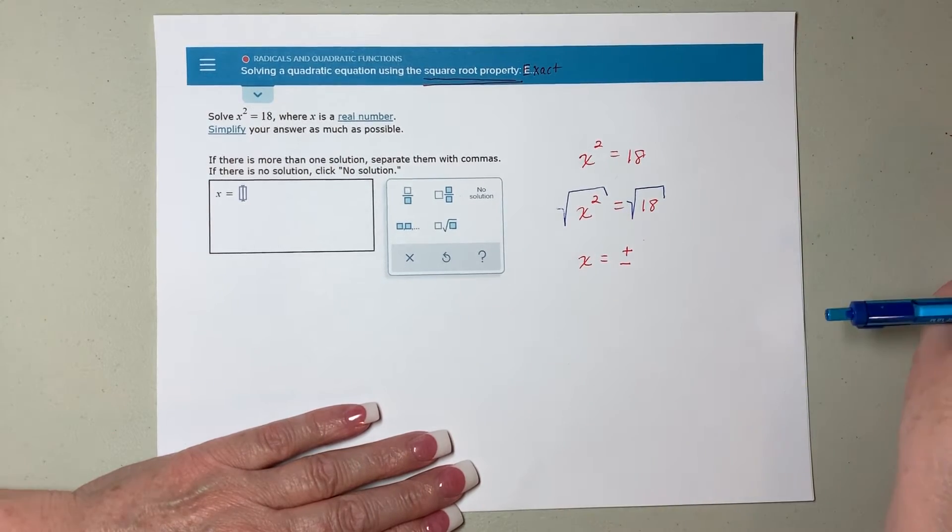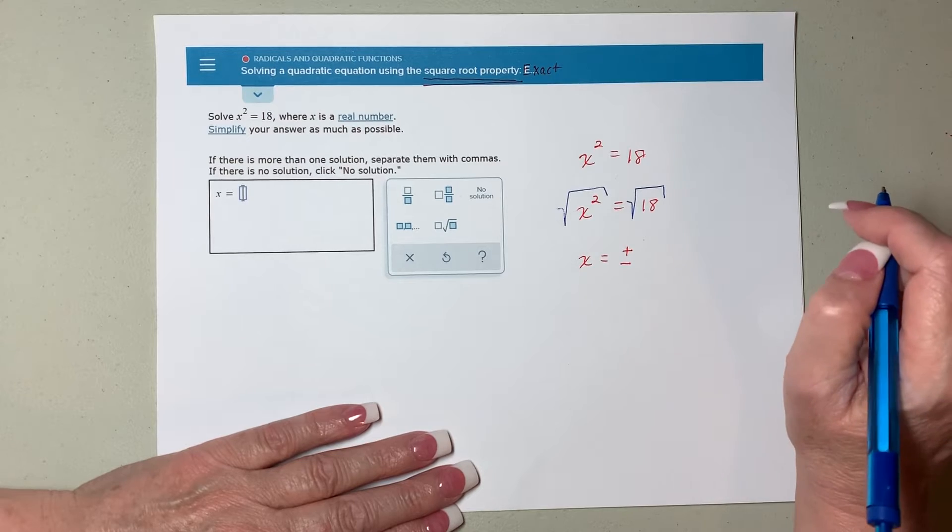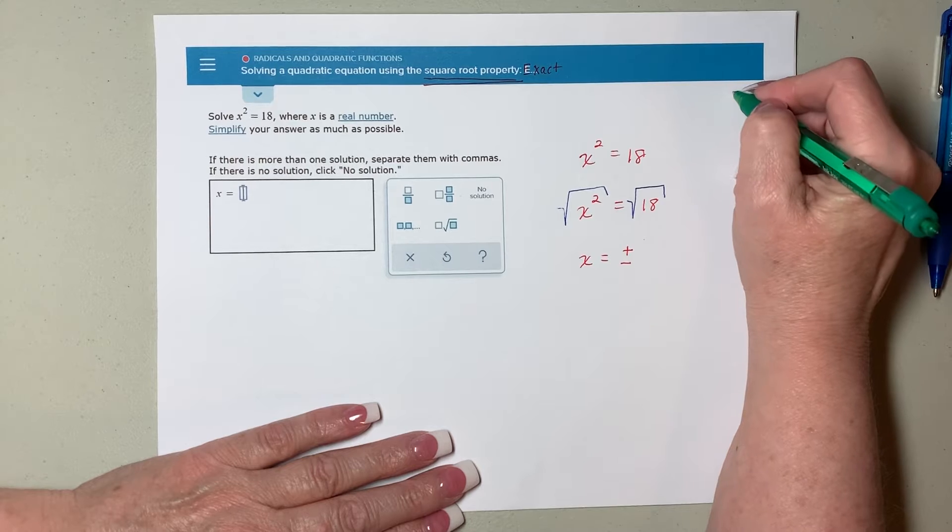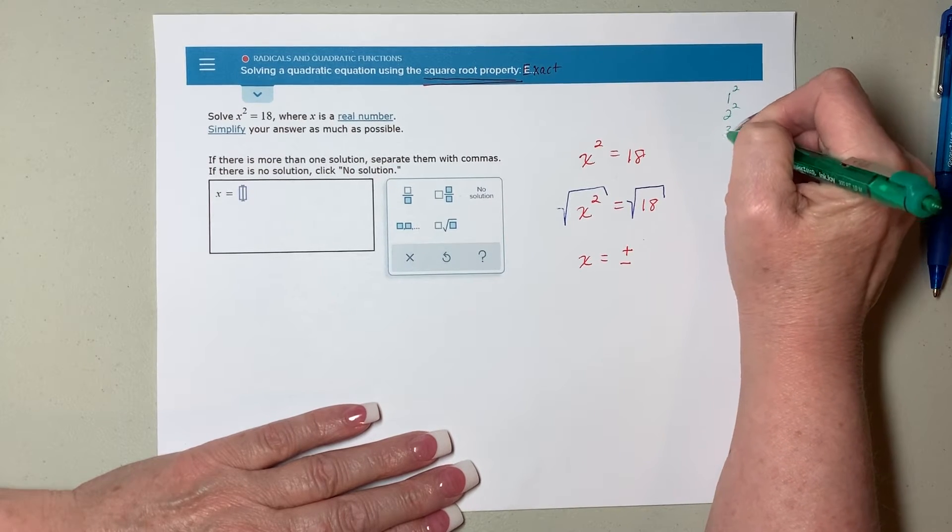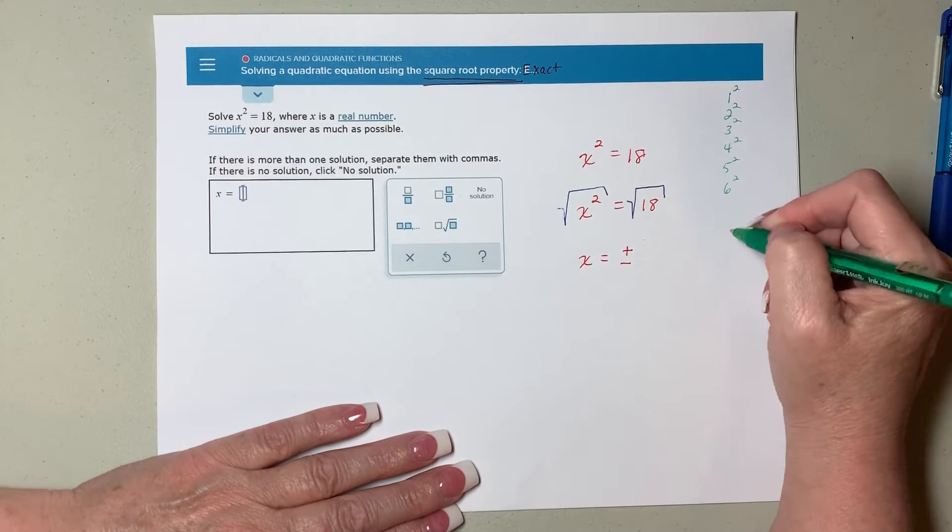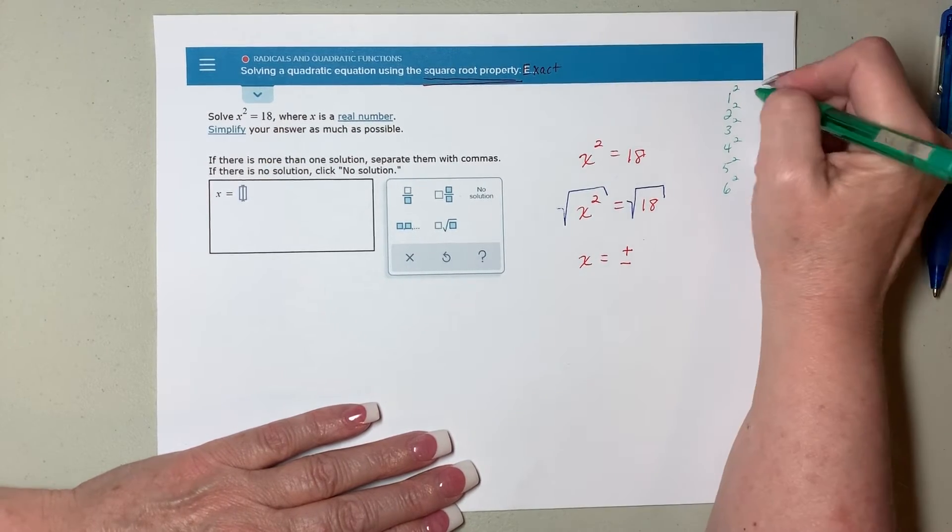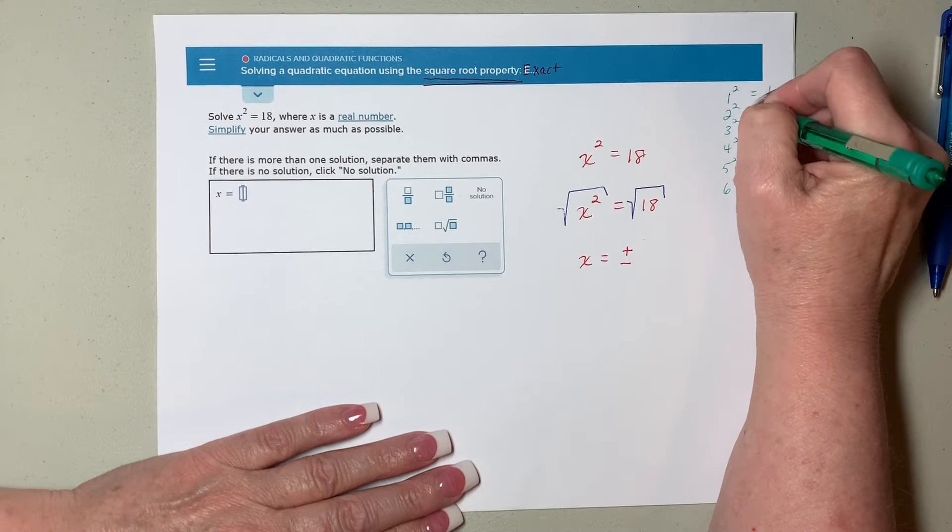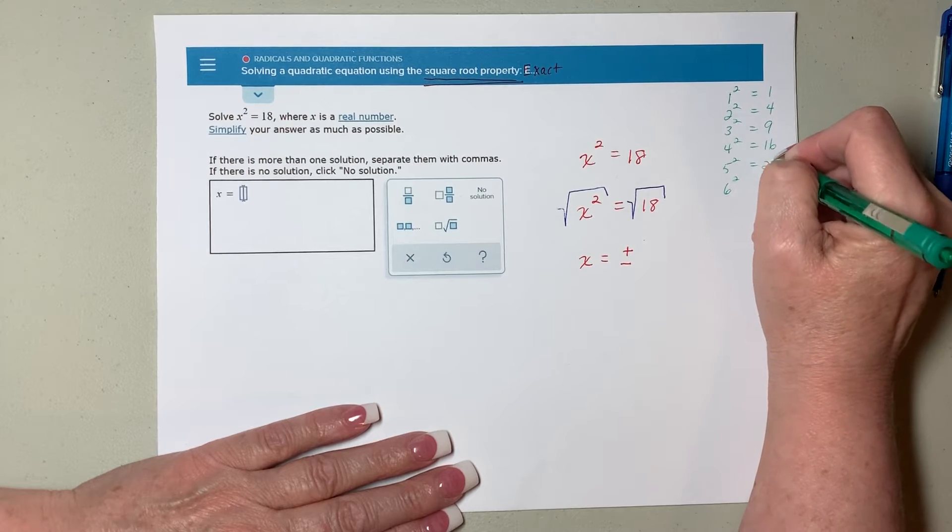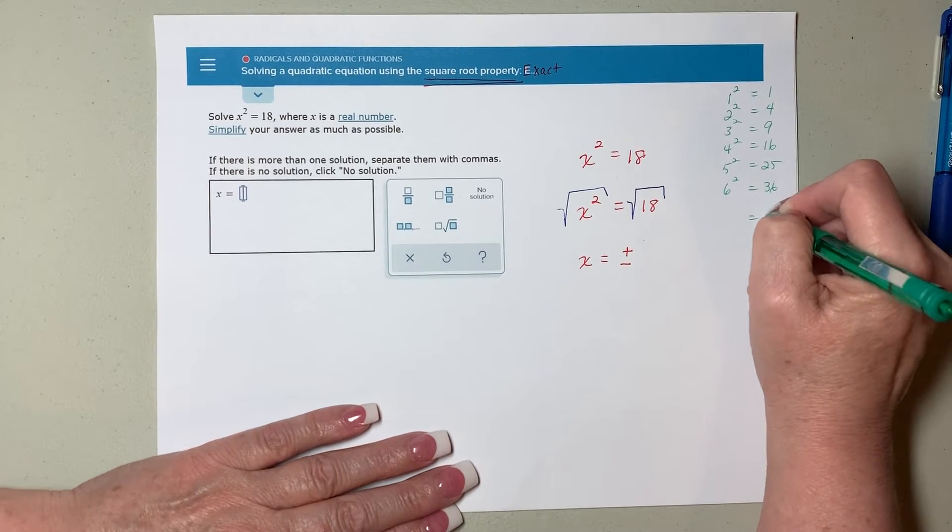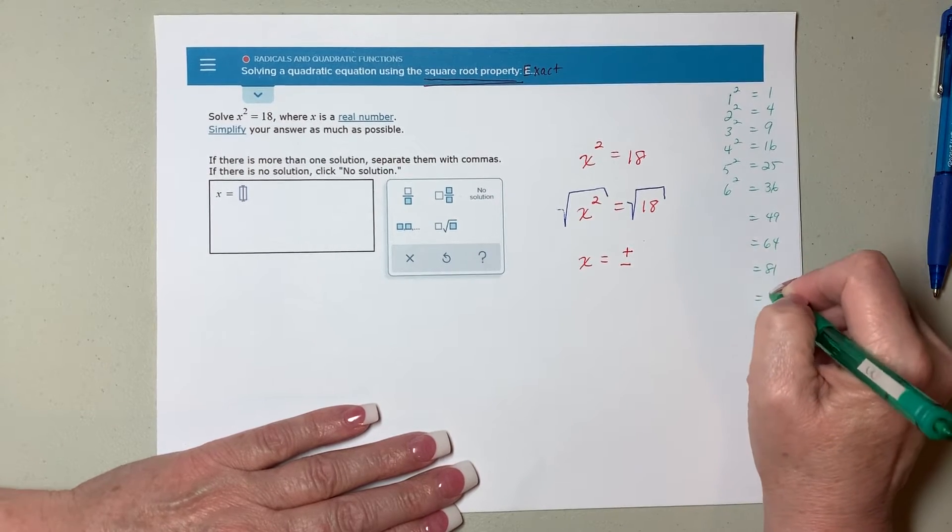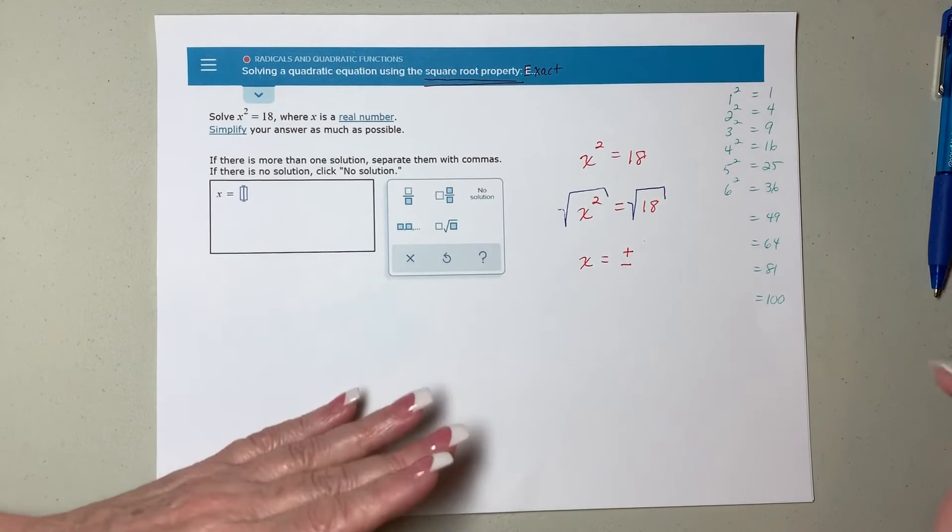Now, 18 is not a perfect square. It helps to know your perfect squares. And the perfect squares are whatever one squared, two squared, three squared, four squared, five squared, six squared. I think you get the point squared. Keep going. The perfect squares are 1, 4, 9, 16, 25, 36, 49, 64, 81, 100. Those are the first 10.